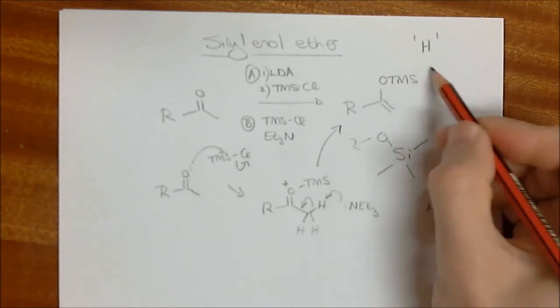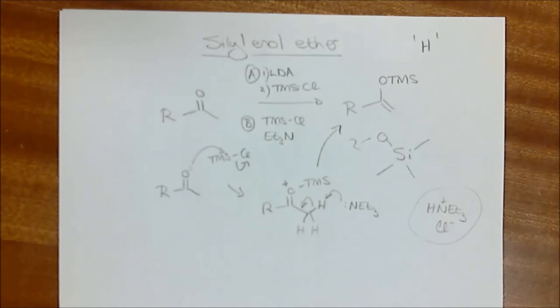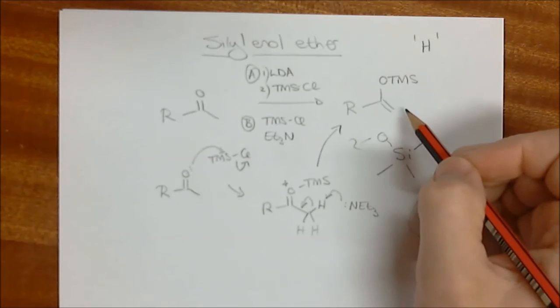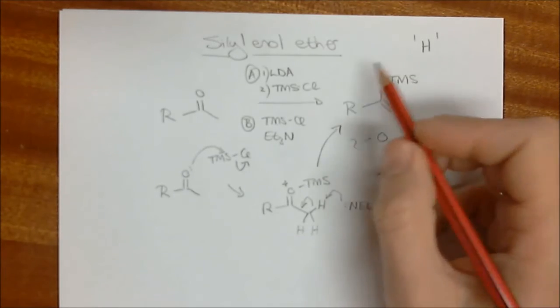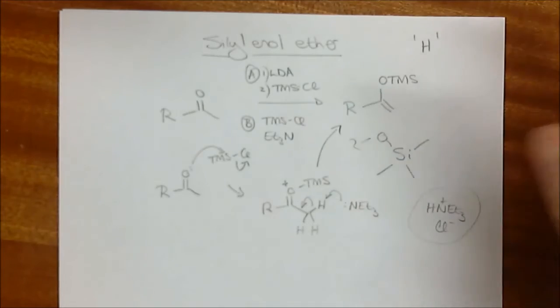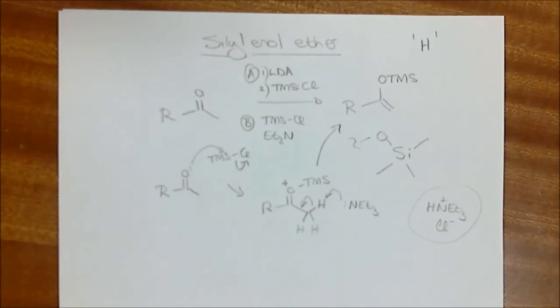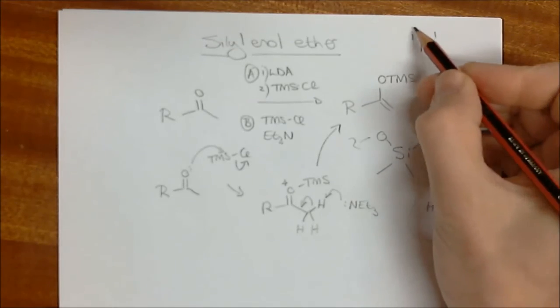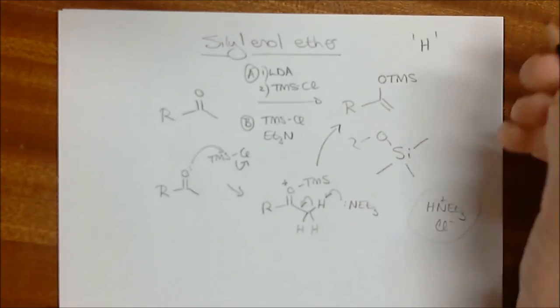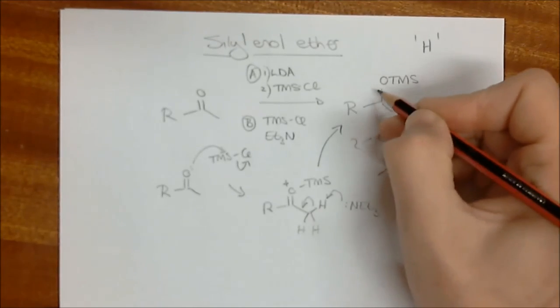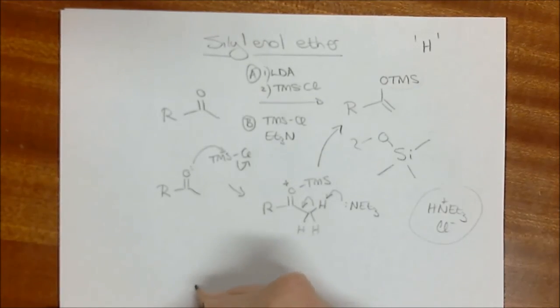So the TMS silyl enol ethers are very important enolate equivalents. The reason being is that although they aren't particularly stable, they're stable enough for us to isolate and to use them in reactions down the line. And it's the way that we use these that we're going to be investigating further on in the course. But for now, again, thinking of this TMS group over here as being like an H, this silyl enol ether is actually the silyl equivalent of an enol, not an enolate, but an enol.